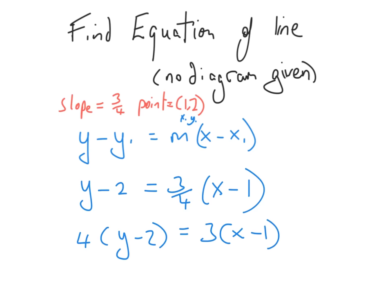A basic law of solving equations is that when you bring a number across the equal sign, you do the opposite of what it was doing. So here the 4 was dividing, so over here it multiplies. This makes it much easier because we've got rid of the fractions, and we simply multiply out the brackets and reorder the equation into the right form.